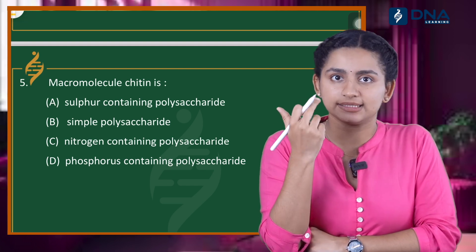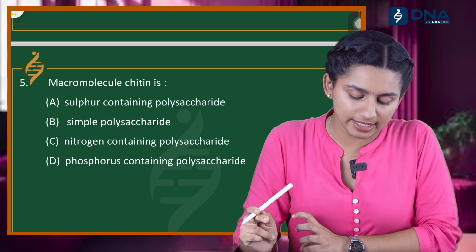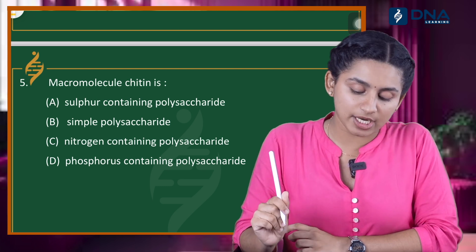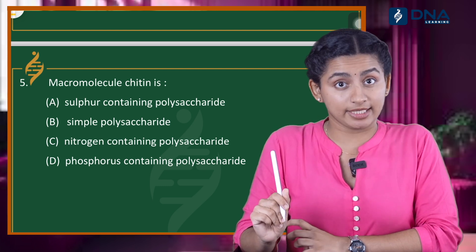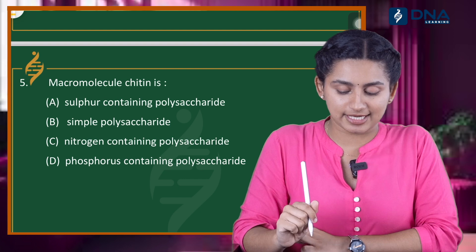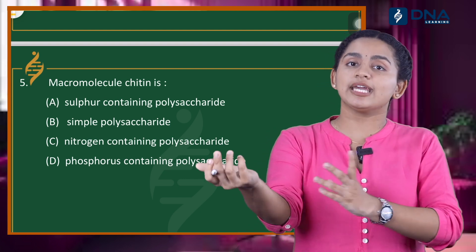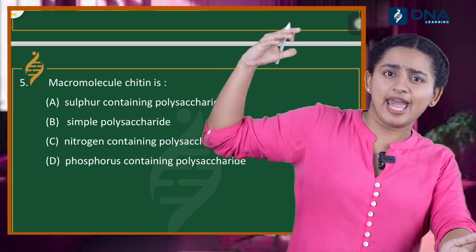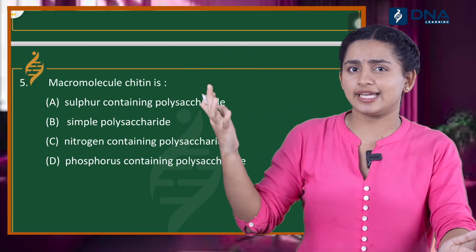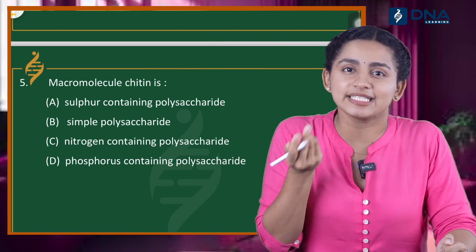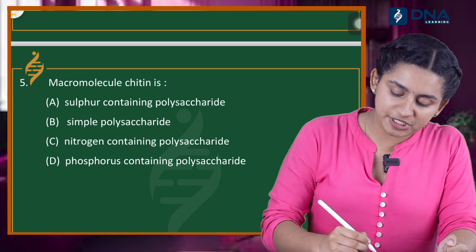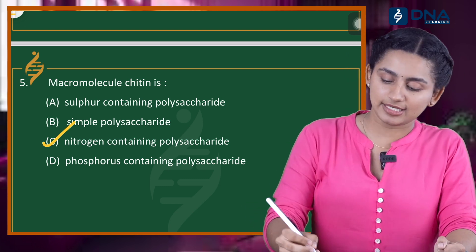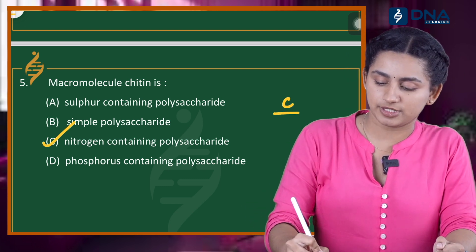Question 5: Chitin is what we are looking for. Option A, sulphur-containing polysaccharide; Option B, simple polysaccharide; Option C, nitrogen-containing polysaccharide; Option D, phosphorus-containing polysaccharide. Chitin is found in the exoskeleton and is a nitrogen-containing polysaccharide. The correct answer is Option C.